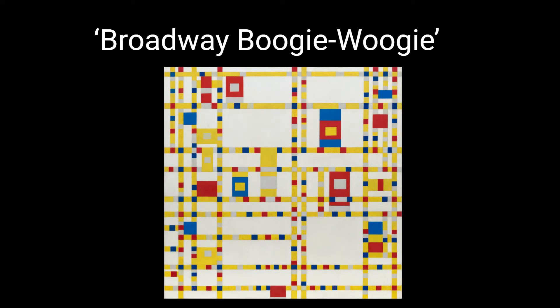Here's a quote from our man himself. He says that he wishes to approach truth as closely as possible, and therefore, 'I abstract everything until I arrive at the fundamental quality of objects.' So this week, Mondrian is going to take us in a different direction than the realistic paintings and pieces we've been looking at. He's more of an abstract artist, and we're going to dive into that right now.